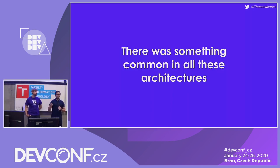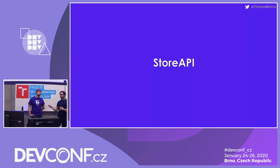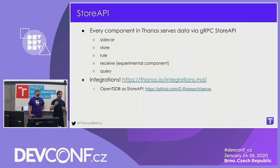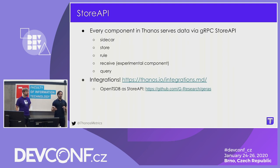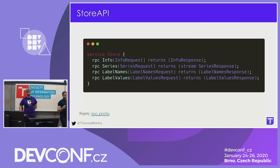Something common in all these architectures is the Store API. The Store API is a gRPC API defined inside the Thanos project. This is, in my opinion, one of the key innovations that the Thanos community brings forward to the ecosystem. It's implemented in all Thanos components that allow evaluation or creation of time series — the sidecar, the ruler, the store gateway, etc. But it's also implemented by some third-party projects that want to act as a bridge between a different format like OpenTSDB and Thanos. Now anybody that implements the Store API can integrate with the Thanos community.